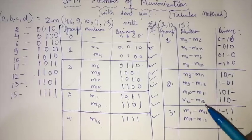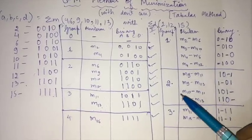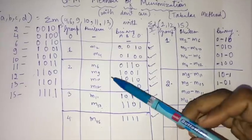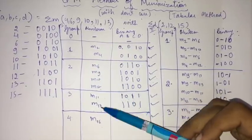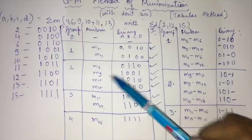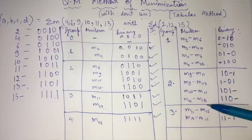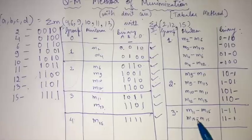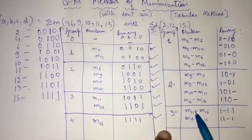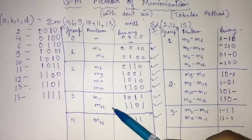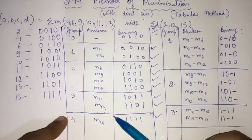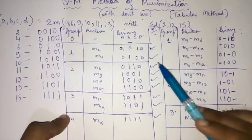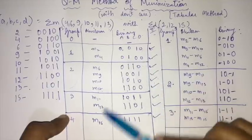The groups for Table 2's group 2 are formed by matching minterms from groups 2 and 3 of Table 1 using the one-bit change rule. Group 3 of Table 2 is formed from groups 3 and 4 of Table 1. All matching pairs are found, tick marks are placed, and none of the minterms is left unaccounted.